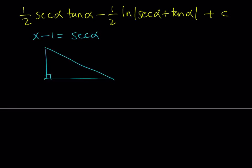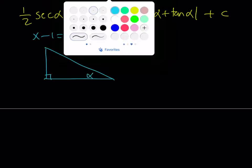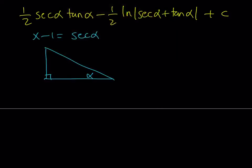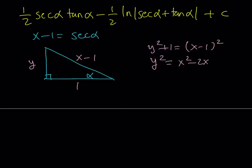Here's my right triangle with alpha being the angle. We need secant alpha to equal x minus 1. Since secant is the reciprocal of cosine, the hypotenuse can be x minus 1 and the adjacent side is 1. The opposite side we find from the Pythagorean theorem: y squared plus 1 equals x minus 1 squared, so y squared equals x squared minus 2x plus 1 minus 1. The ones cancel, and taking the square root gives y equals the square root of x squared minus 2x.